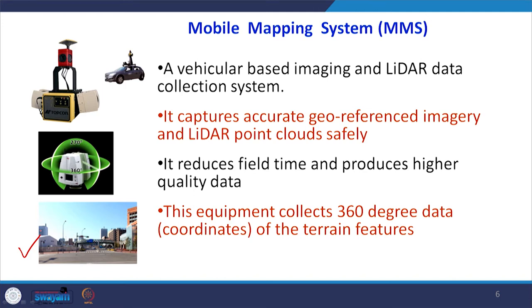A major advantage of this system is that it can operate in an urban setup without being hampered by crowds, since the instrument is situated at a certain height and can monitor all around — front, back, and both sides. It takes a panoramic view and scans the whole area as the vehicle moves. The data is georeferenced because GPS coordinates are continuously collected, giving us georeference data and covering very large areas in the shortest possible time with high quality output.